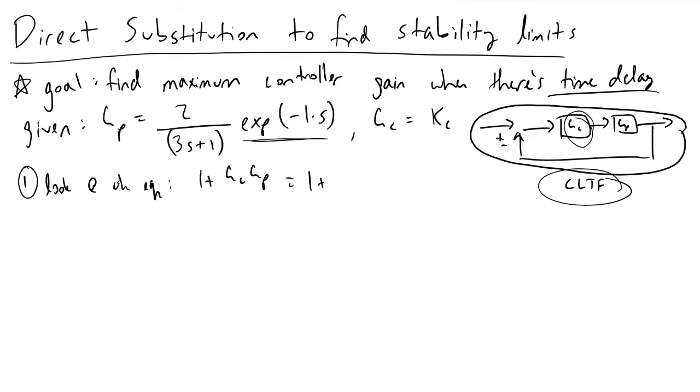This is equal to 1 plus Kc times 2 exponential minus s, quantity divided by 3s plus 1.